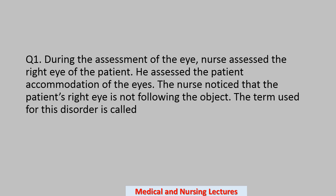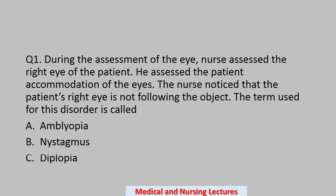Question number one: during the assessment of the eye, a nurse assesses the right eye of the patient. He assesses the patient's accommodation of the eyes. The nurse noticed that the patient's right eye is not following the object. The term used for this disorder is called — options are amblyopia, nystagmus, diplopia, and conjunctivitis. The correct option is amblyopia.